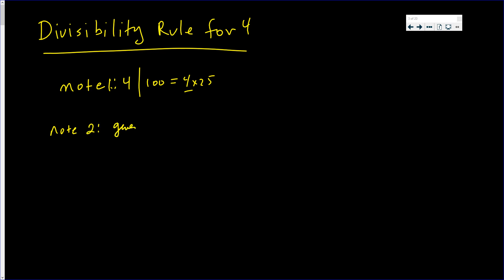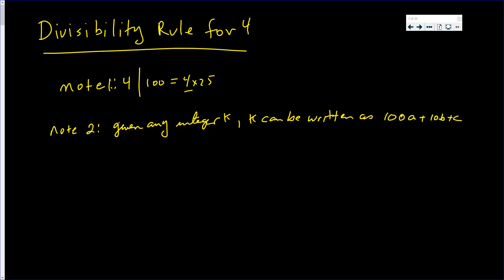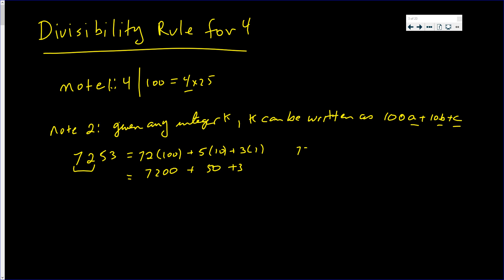Note two: given any integer k, k can be written as one hundred a plus ten b plus c, and any one of those a, b, and c can equal zero. For example, if you have seven thousand two hundred fifty three, those are the number of hundreds you have — seventy two hundreds plus five tens plus three ones. That gives you seventy two hundred plus fifty plus three, which is seven two five three.